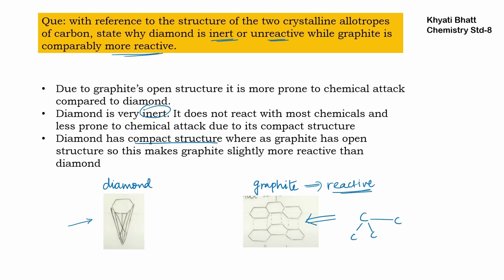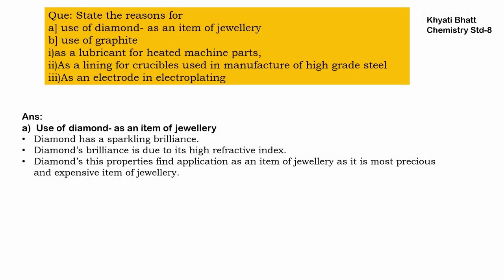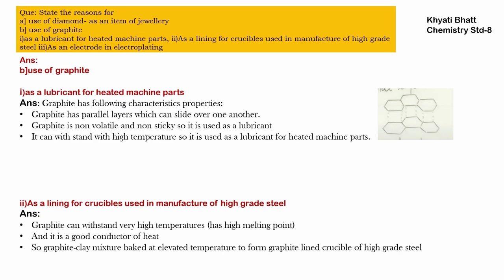Reasons for the use of diamond as an item of jewelry: diamond has a sparkling brilliance — it shines when light falls on it. This brilliance is due to the high refractive index of diamond. Due to this property, diamond finds application as an item of jewelry, as it is the most precious and expensive.